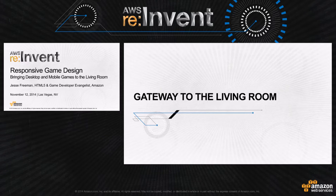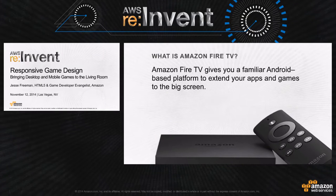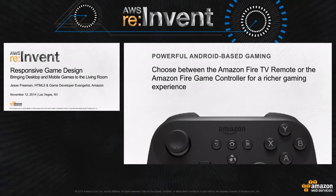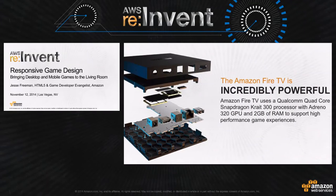Let's talk about Fire TV and the gateway to the living room. Fire TV gives you a familiar Android-based platform to extend your apps and games to the big screen. It's a powerful Android-based gaming device — you can install apps and games, and with an optional controller, get some pretty interesting games running. It features a quad-core processor, a dedicated GPU, and 2 gigs of RAM, enabling high-performance gaming in a very small form factor.